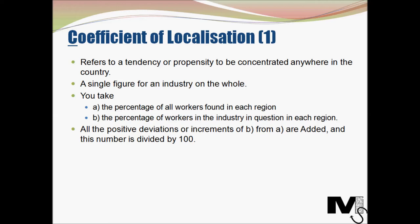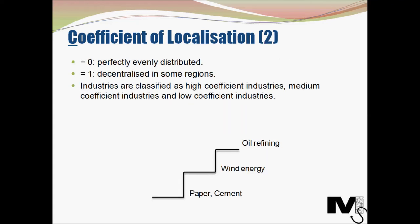That is how you calculate the Coefficient of Localization — the more areas you have, the more complicated the calculation becomes. In terms of interpretation: if the value is zero, the industry tends to be perfectly evenly distributed. If the coefficient is exactly one, the industry tends to be decentralized in some areas. Based on the value, industries are then classified as high coefficient industries, medium coefficient industries, and low coefficient industries.